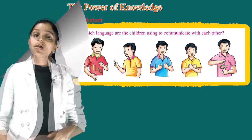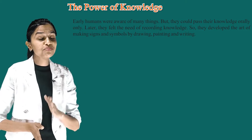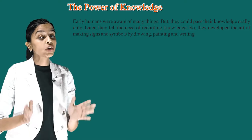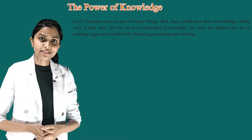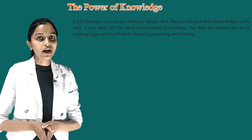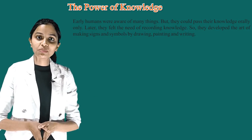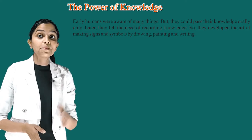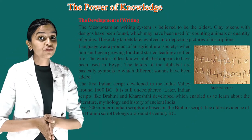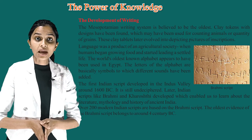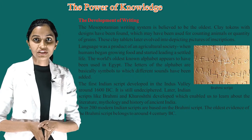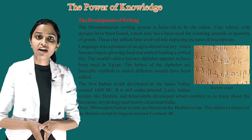Early humans were aware of many things, but they could pass their knowledge orally only. Later, they felt the need of recording knowledge, so they developed the art of making signs and symbols by drawing, painting, and writing. The development of writing — the Mesopotamian writing system is believed to be the oldest.